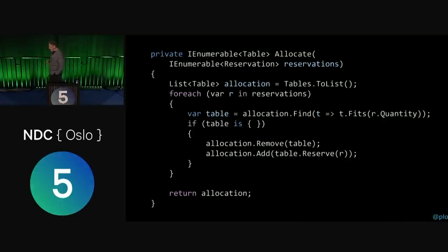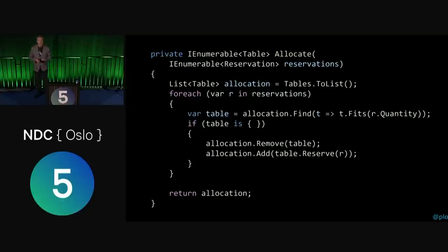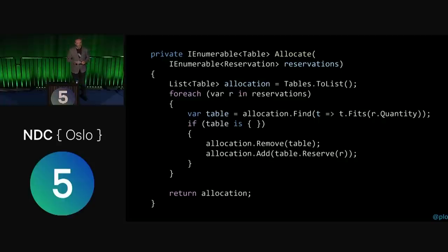We want to make code readable, but we need to figure out how to determine whether or not code is readable. Something like this — is it readable or not? If you're a C# developer you'll probably recognize this as fairly idiomatic C#. If you do Java or TypeScript or something from the C family, you can probably still understand what's going on. But the point is not to talk about what this code does — I want to talk about how we actually read code.